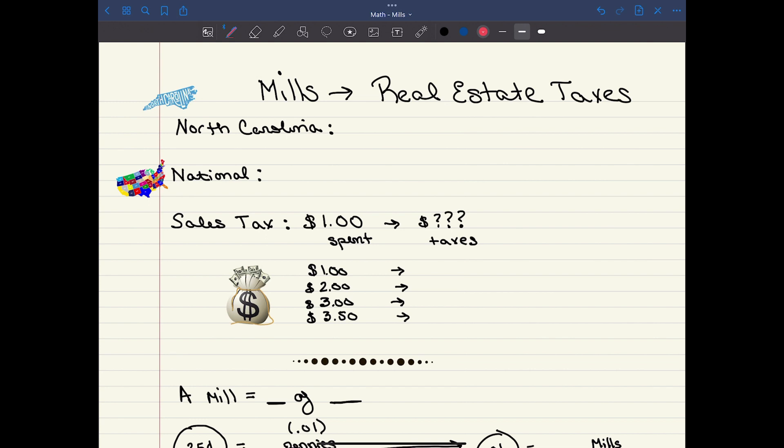Now here in North Carolina, you may remember that when we're calculating property taxes, we're basing it off of some dollar amount for every $100 of the assessed value. Now it would be great if everybody did it that way, but unfortunately, they don't.